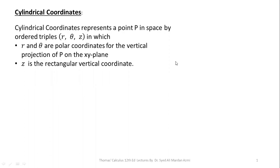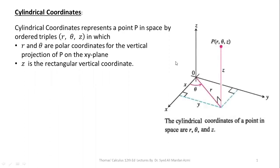Cylindrical coordinates represent a point P in space by the ordered triplet R, theta, Z, in which R and theta are polar coordinates for the vertical projection of P on the xy-plane. This is the rectangular vertical coordinate. If you take an example of two-dimensional space — that is, only the x-axis and y-axis — then the coordinate of this point (where the mouse is right now) will be R and theta in polar coordinates. And if we lift this point into the third dimension in the direction of the Z-axis, then the coordinates become R, theta, and Z. So adding the third axis to polar coordinates develops a cylindrical coordinate system.